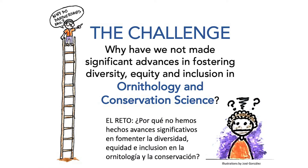The challenge before us was: why have we not made significant advances in fostering diversity, equity, and inclusion in ornithology and conservation science? In other words, if we set these out to be important guidelines, what's slowing us down? We wanted to see what might be some systematic considerations in the partnerships and relationships, especially between community-based organizations and science institutions.